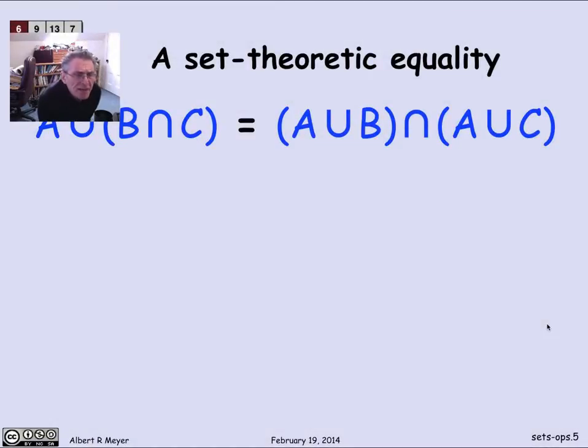So let's stop for a minute and make use of the similarity between set theoretic operations and propositional operators. Let's look at a set theoretic identity which I claim holds no matter what sets A, B, and C you're talking about. We're going to prove it by making the connection between set theoretic operations and propositional operators. It says that if you take A union (B intersection C), that's equal to (A union B) intersected with (A union C).